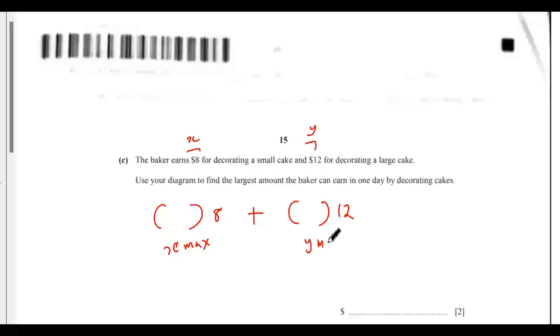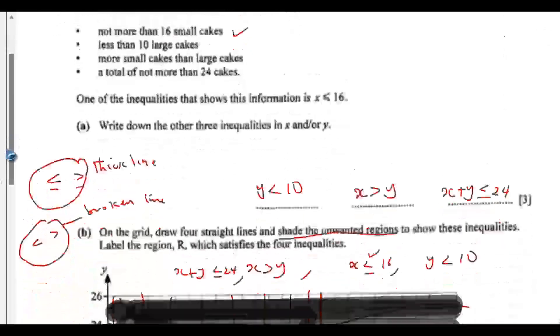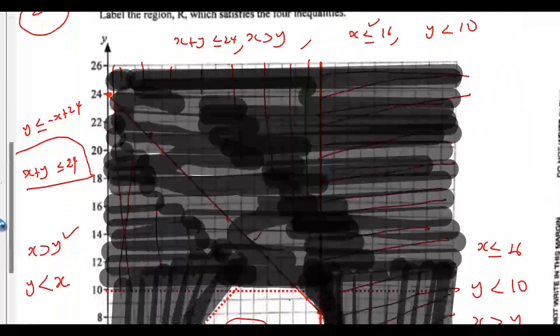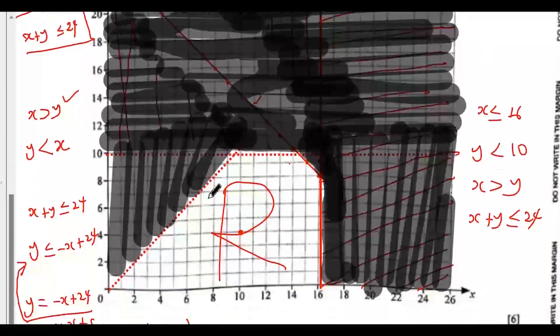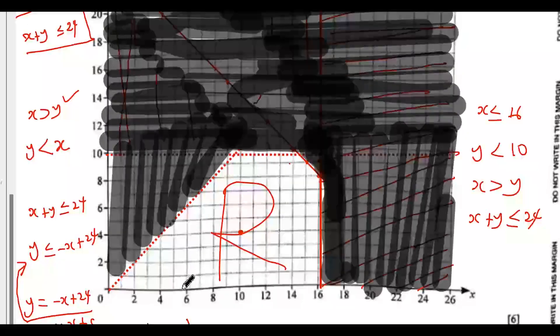And this is y maximum. So let's go back to the grid and look for the maximum values of x and y respectively. Here we have the values for x and y in this labeled region R. The maximum value of x should be on this line, that is 16. So this point here. This point is part of the solution; anywhere we have a broken line is not part of the solution.